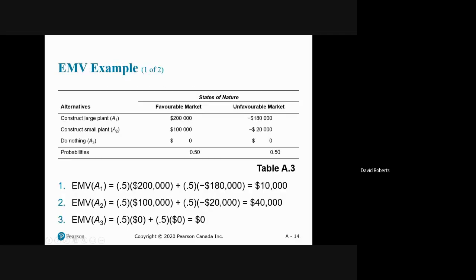Expected monetary value of alternative A1—construct a large plant—is 50-50, so it's equally likely. So 50% of 120,000 and 50% of a loss of 180,000 will give you a total of -10,000 expected monetary value. A2 you can see the math: 50-50, then total it together, and you have 40,000. Expected monetary value of doing nothing is zero. So what should you pick? The best alternative is construct a small plant, which is A2.